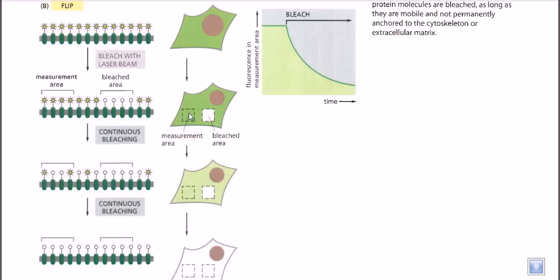Why does the fluorescence decrease in the unbleached area? Since that area was not bleached, the only possible explanation is that the phospholipid molecules from the unbleached region are moving into the bleached area. This movement of phospholipids causes the fluorescence in the unbleached zone to fall.